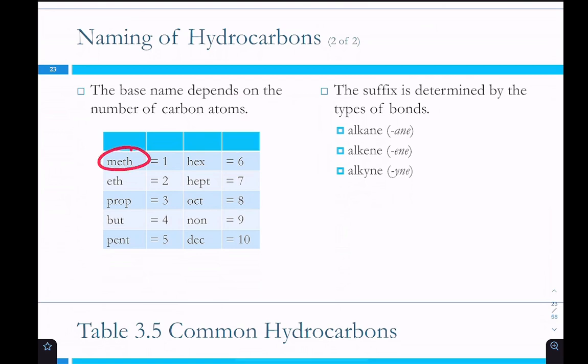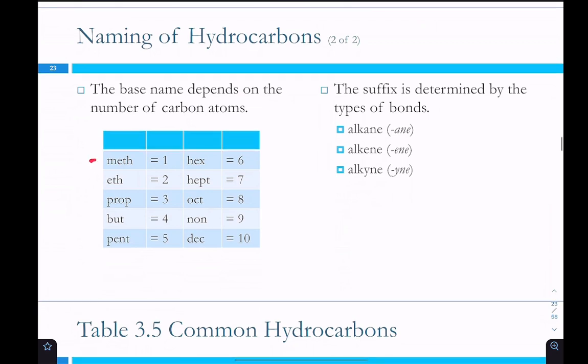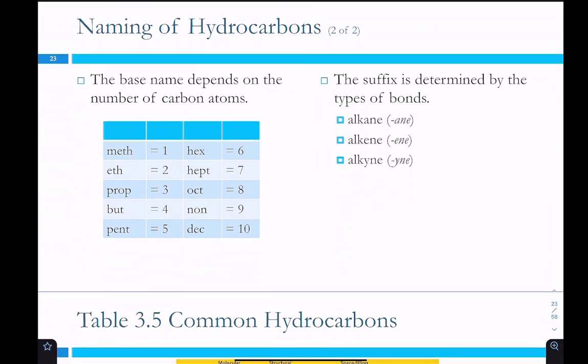Base name depends on the number of carbon atoms. So we have meth, eth, prop, butane, pent, hex, hept, oct, non, and dec. And these are very similar to the other ones that we have for molecular compounds except for one through four. One through four have their own special organic chemistry names. Meth, eth, prop, and butane. And after that it's the same. So these are the names here and then ethylpropyl butyl you'll have to just memorize those ones.